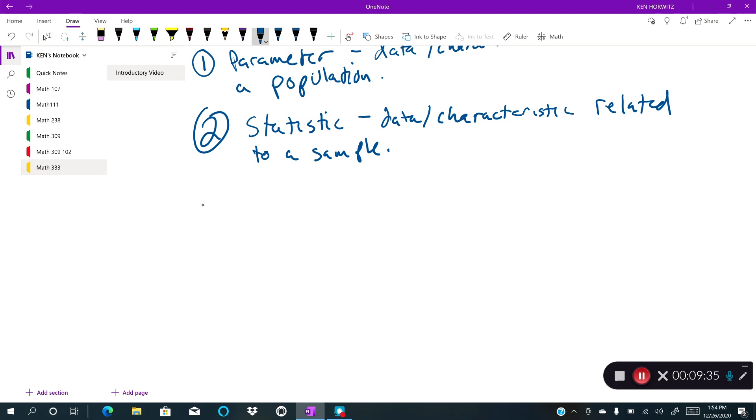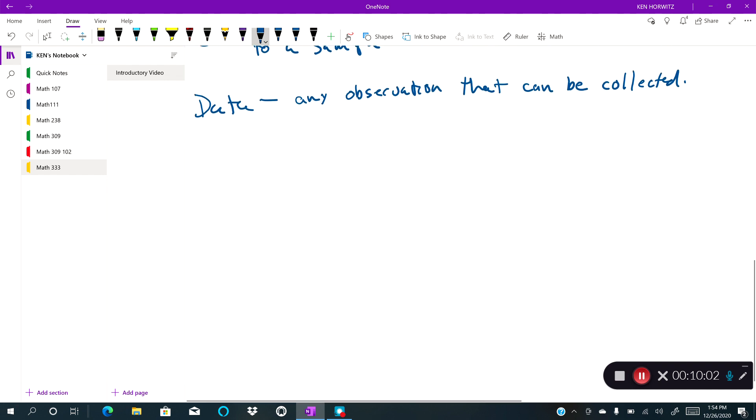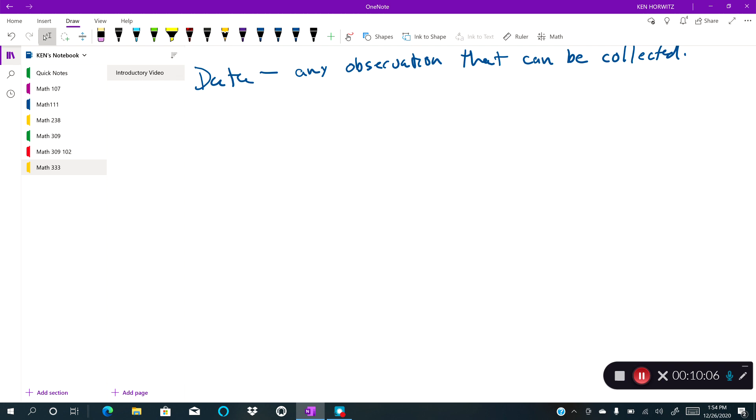And when we talk about the word data, we can say that that would be any observation that can be collected. Now if we're talking about data, there are certain categories of data that we could use. For example, the first category of data would be qualitative data.